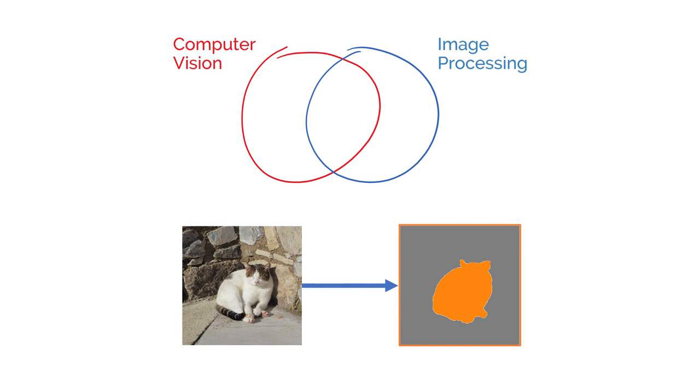If a model produces per-pixel labels for an input image, then its output can be considered as an image. In that sense, the model would be doing some sort of image processing. On the other hand, since such a transformation involves image understanding, trying to understand what's in the input, it would also be considered computer vision.